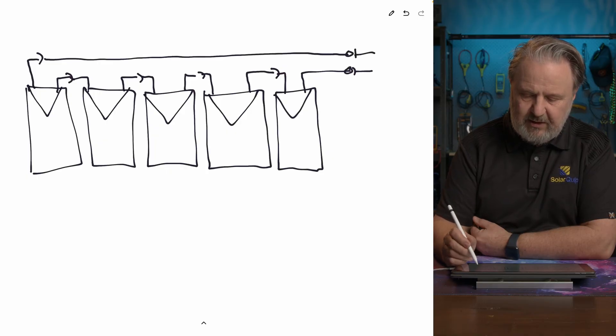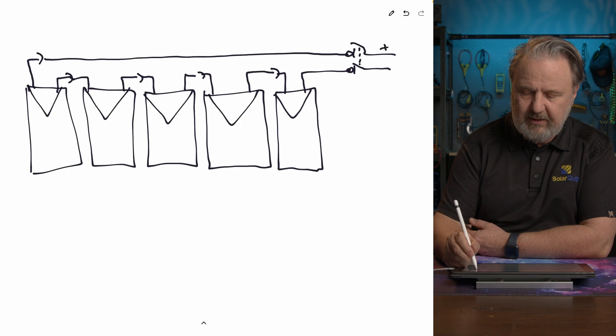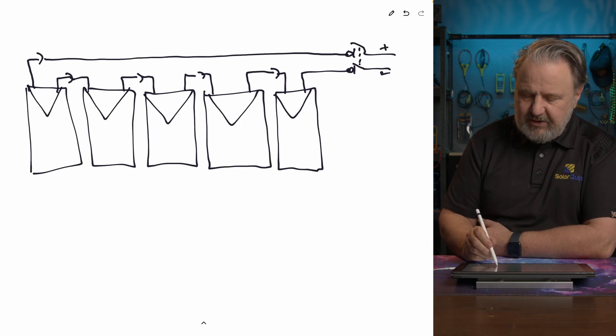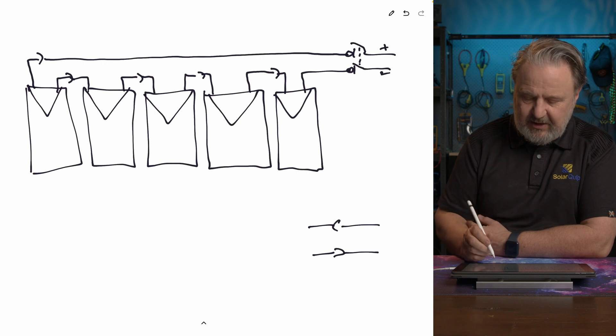In newer systems, since the new standard for PV arrays ASNZS 5033 the 2021 edition, we introduced a new feature called the disconnection point. The disconnection point allows you to not have a load break disconnector but just use the plug and sockets at the end of the string as the point of disconnection. There are two types: a load break disconnector — ganged so both poles disconnect at the same time — or simply another plug and socket, which is known as a disconnection point or DP for short.